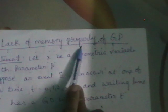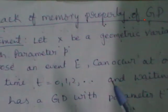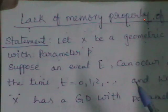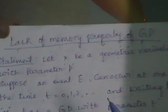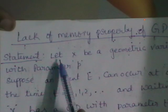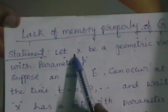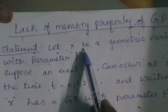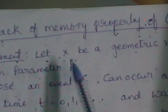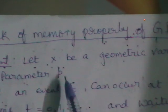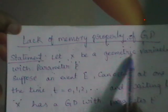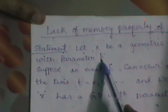The next topic is the lack of memory property of geometric distribution. You need to write the statement as well. In some cases, the statement will be given to you. Consider x as a geometric variable. The parameter of a geometric distribution is P. Let us consider x as a geometric variable with parameter P.